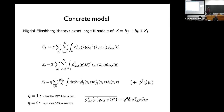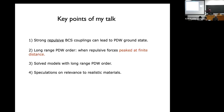I allow for the possibility of either attractive or repulsive BCS interactions. There is a term involving psi-dagger psi-dagger, and the key is that if it's repulsive the coupling is imaginary; if it's attractive it's real. We're going to study the repulsive case. The main points of my talk: repulsive BCS couplings can lead to pair density wave order; you get long-range order when the repulsive forces are peaked at finite distance — somewhat reminiscent of what Andre was talking about in the frequency domain, but here as a function of position.